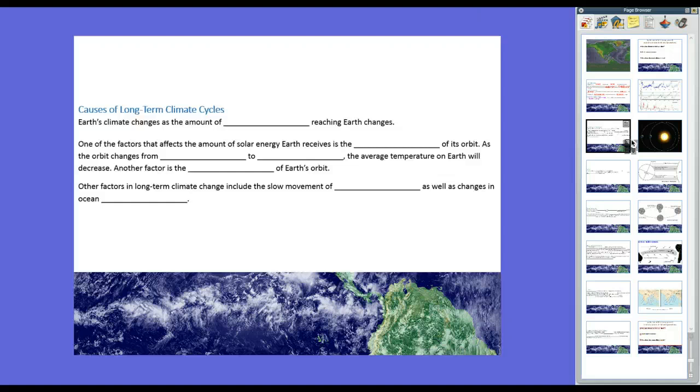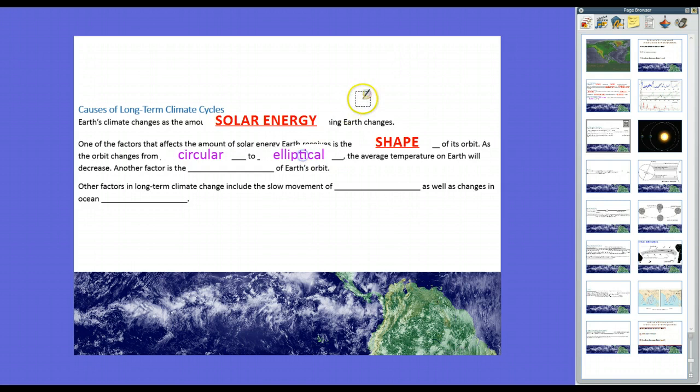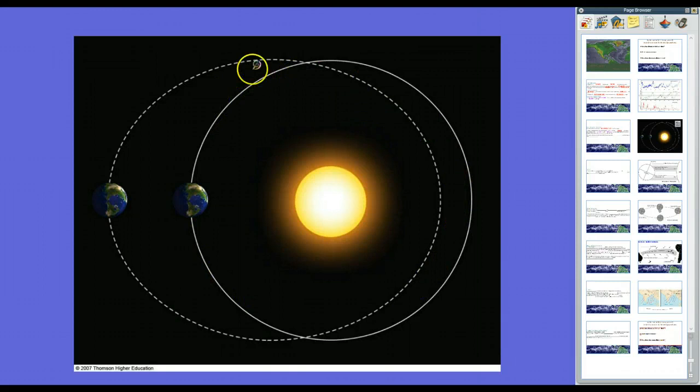So, what causes these long-term cycles of ice ages and warm periods and interglacials? That's because Earth's climate changes because the amount of solar energy reaching the Earth changes. So light from the sun and warmth hitting the Earth causes those changes. Now, one of the factors that affect the amount of solar energy Earth receives is what we call the shape of its orbit. Earth doesn't rotate around the sun in a perfect circle. Rather, it kind of wobbles in between two shapes, between a circle and an oval. So, it goes from circular to what we call an elliptical orbit. And as it goes from a circular to elliptical orbit, the average temperature on Earth will decrease because in the elliptical orbit, there'll be times where Earth will get slightly closer to the sun, but it goes out further out. And as a result, this doesn't warm it up quite as much as it would in a nice circular orbit. Because it warms and cools, that leads to ice ages.